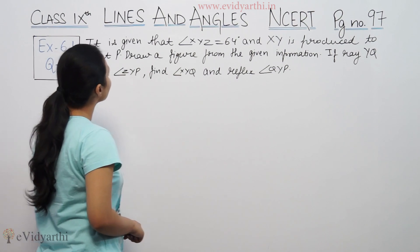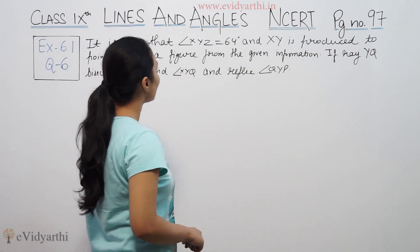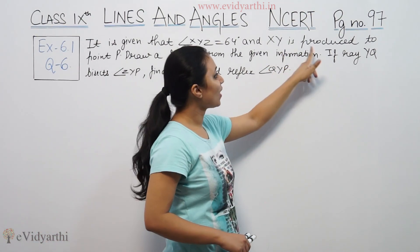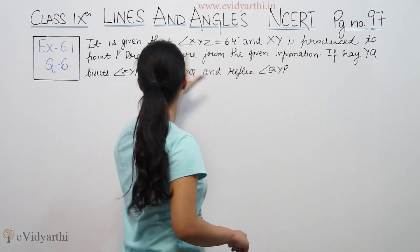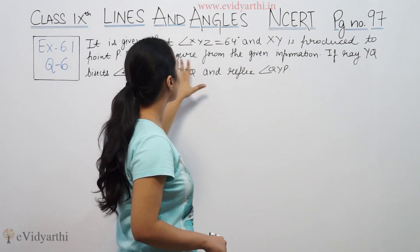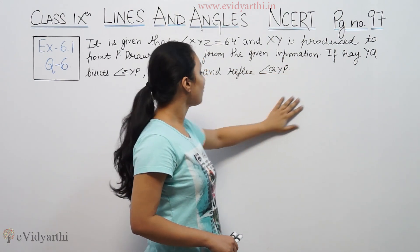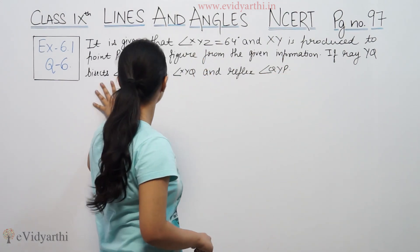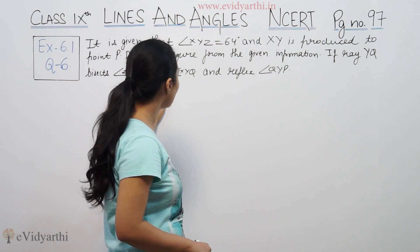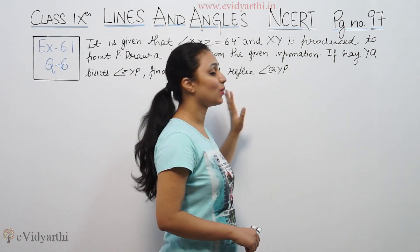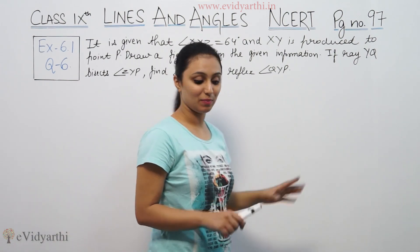It is given that angle XYZ is 64 degrees and XY is produced to point P. Draw a figure from the given information. If ray YQ bisects angle ZYP, find angle XYQ and reflex angle QYP.